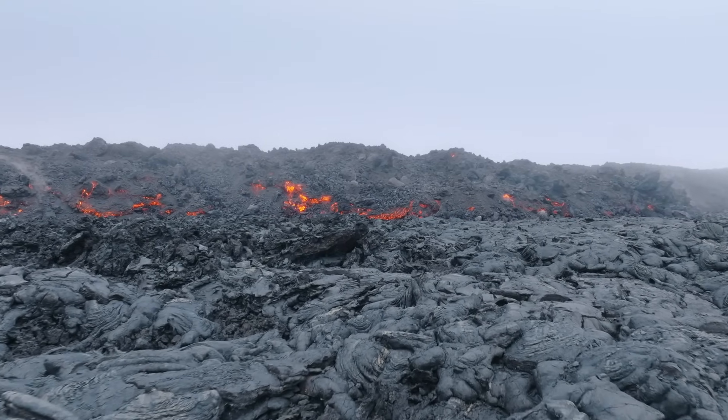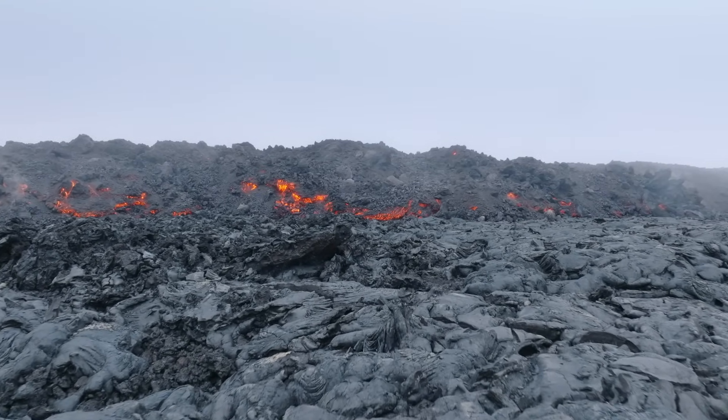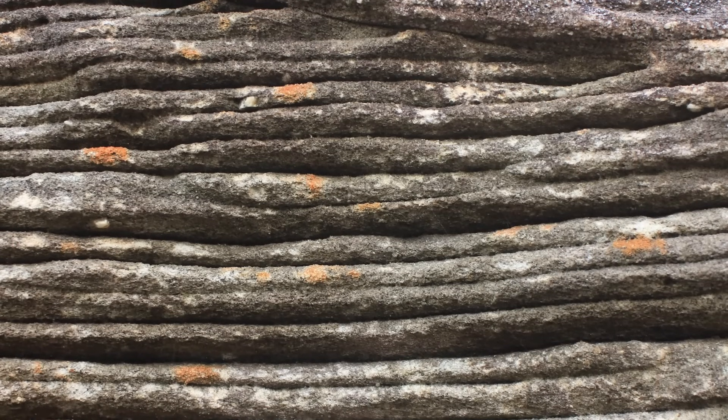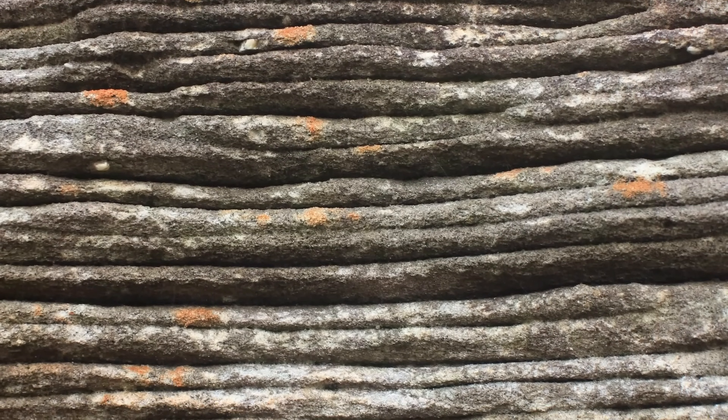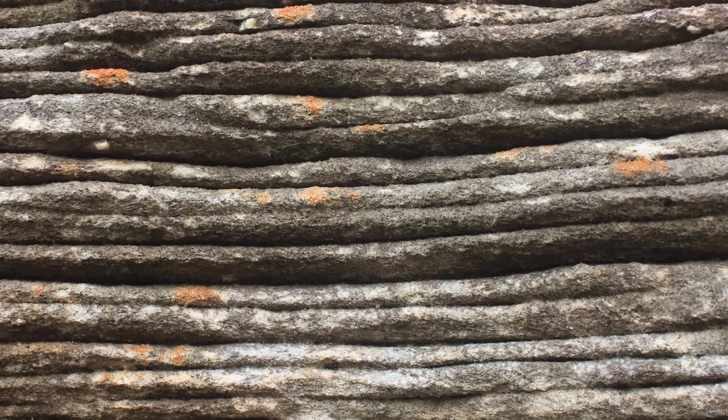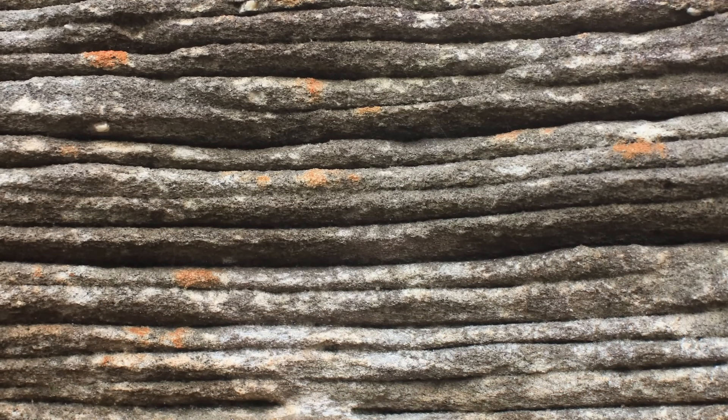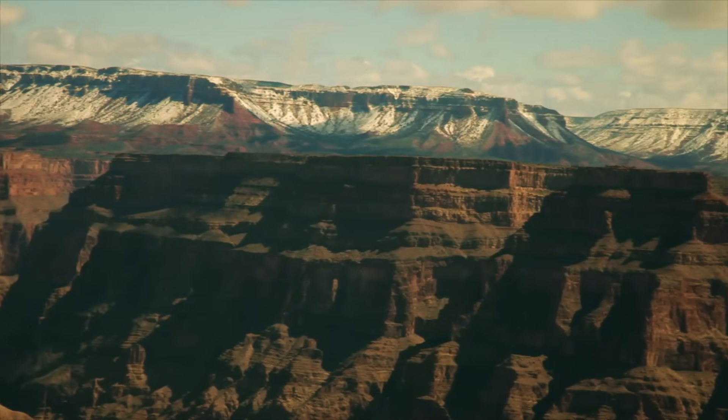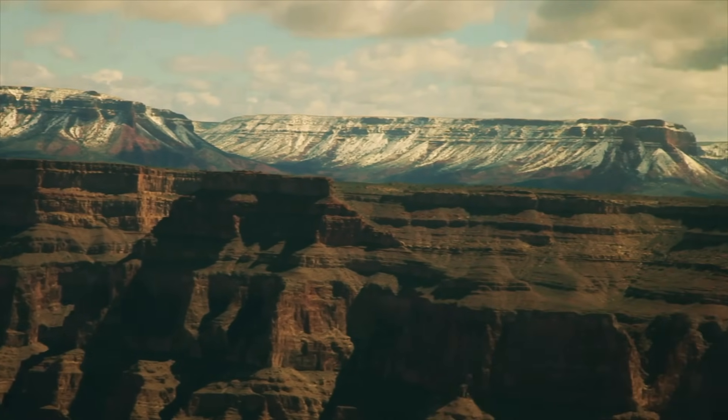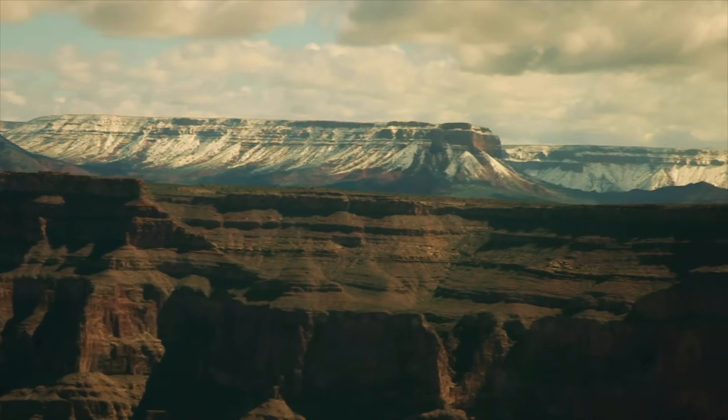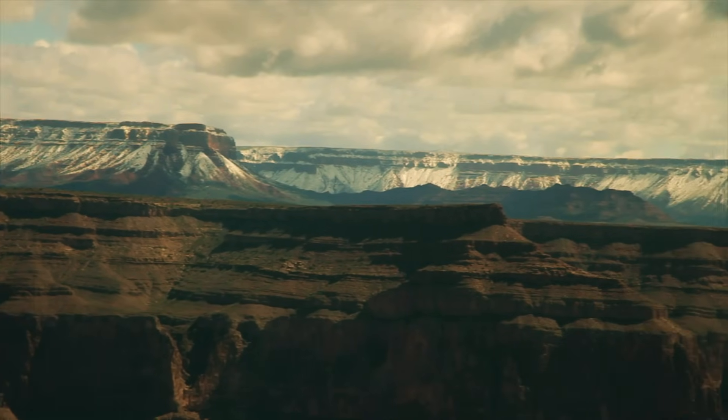As scientists examine layers of rocks from different time periods, they can see changes in the alignment of these magnetic minerals. If the alignment suddenly flips or shows a significant shift, it suggests a reversal of the Earth's magnetic poles. In other words, by analyzing the orientation and strength of magnetic minerals in rocks of different ages, scientists can construct a timeline of the Earth's magnetic history.